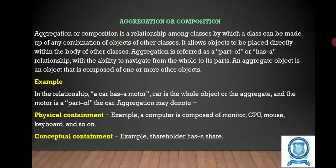Aggregation is a relationship among the classes by which it can extract the objects of other classes. It may be referred to as a 'part of' or 'has a' relationship. For example, in a relationship, a car has a motor — the car is a whole object or the aggregate, and the motor is a part of the car.